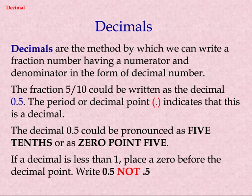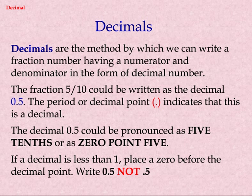If a decimal is less than 1, place a zero before the decimal point. Write 0.5, not .5.